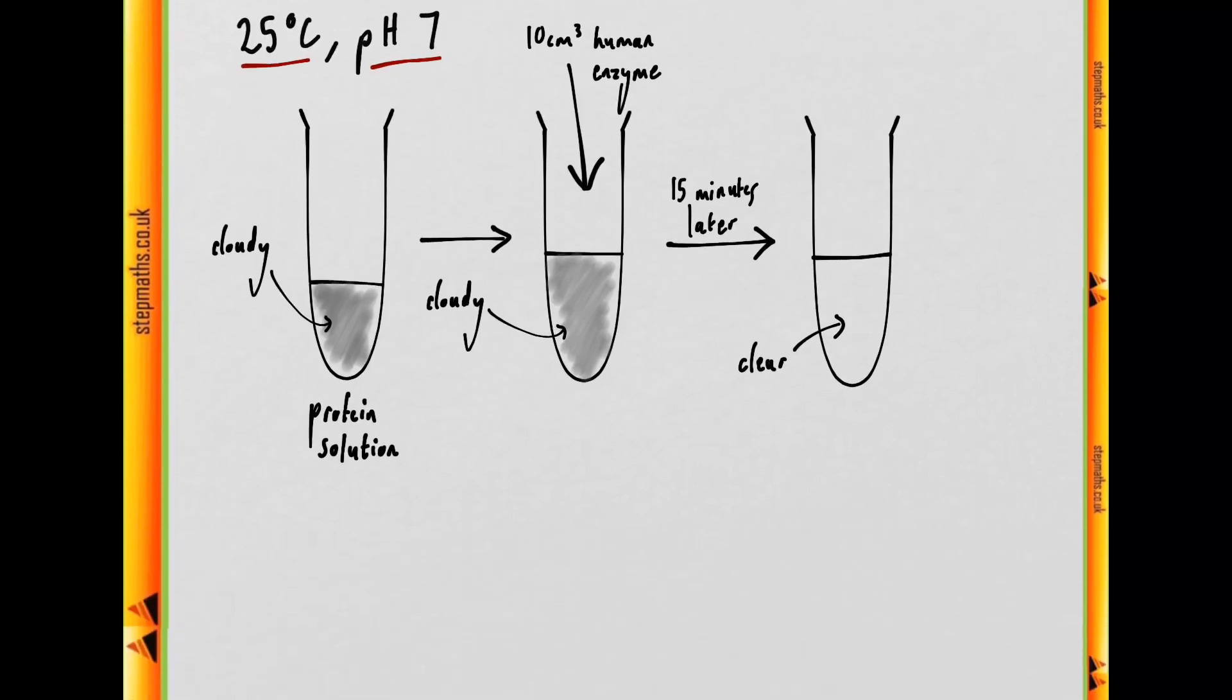Okay, so then we're asked the question, what could the student do so that it would take less than 15 minutes for the solution to become clear? So that's a byword for how could you increase the rate of the reaction? Given in 15 minutes this particular reaction occurs, how can we do it any faster?